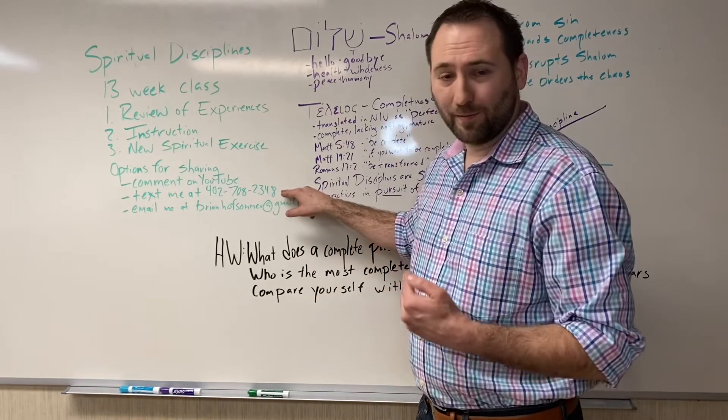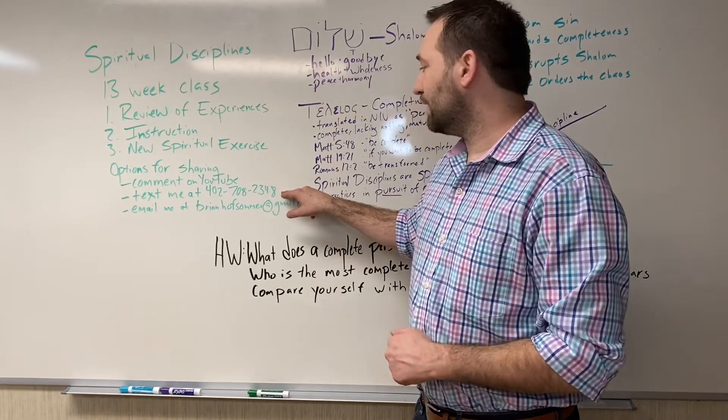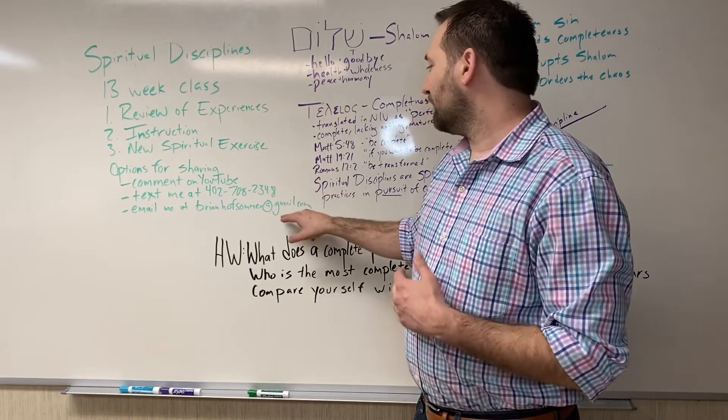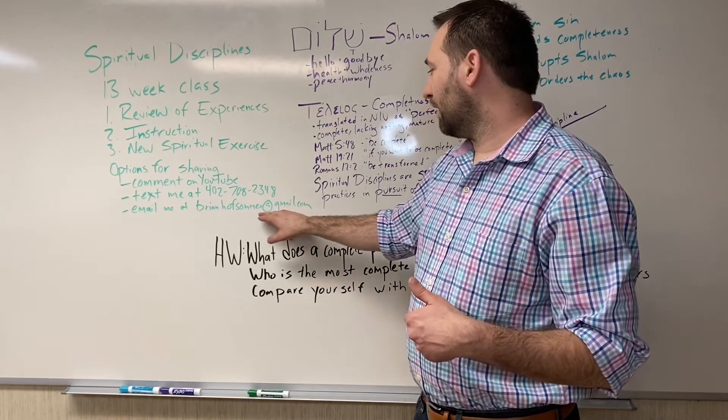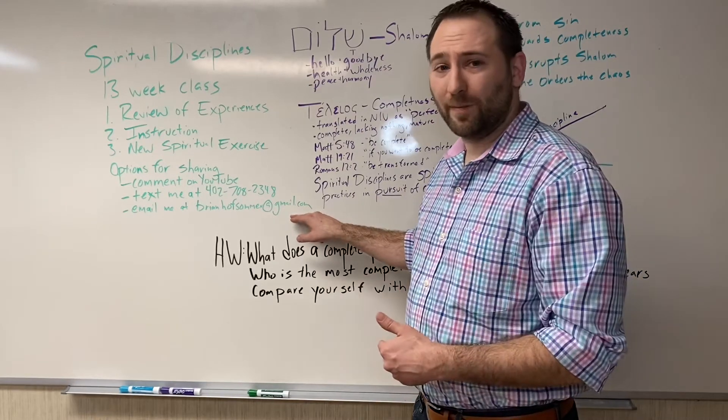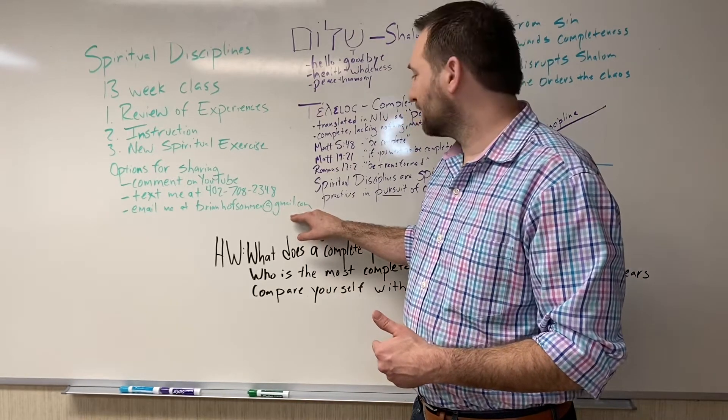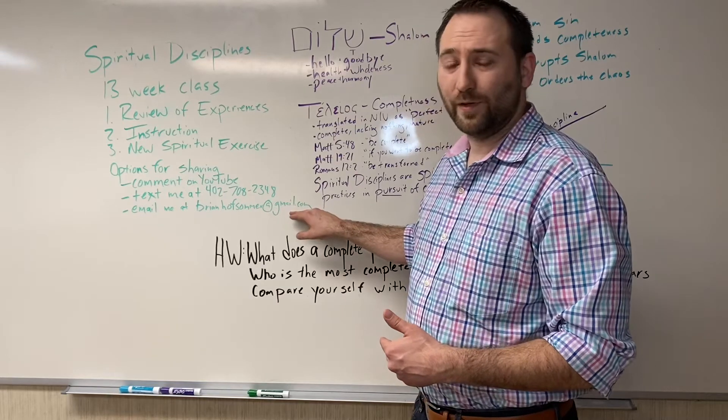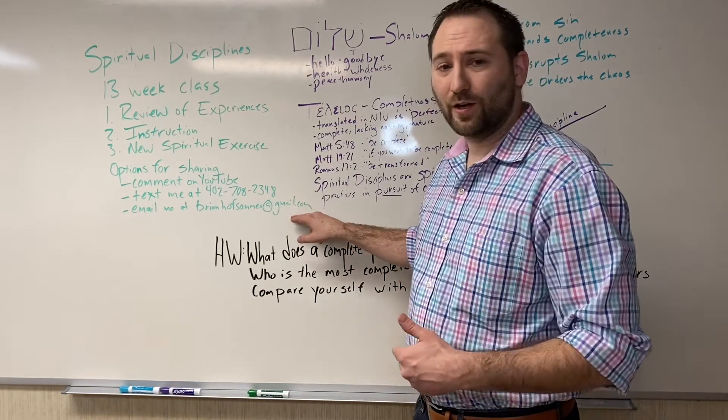You can text me at my number, 402-708-2348, or you can email me at brianhoffsummer@gmail.com. I will be reading some of the comments, especially some of the really good comments that you text and leave me through email. I really encourage you to share as we go along.